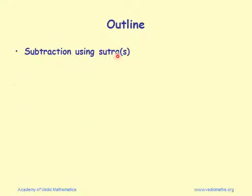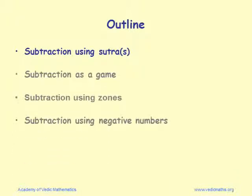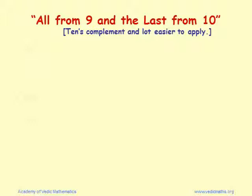We are now on the first section: using sutras. 'All from nine and the last from ten' is the main sutra used in subtraction. It gives the tens complement, and in my opinion the sutra is a lot easier to apply than thinking of tens complements directly. Let's see what we mean by 'all from nine and the last from ten.'